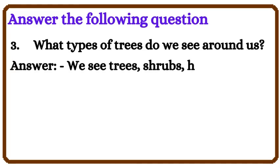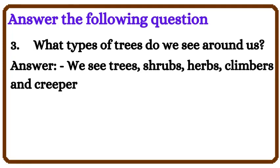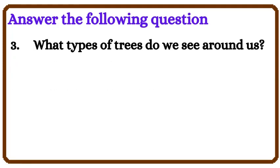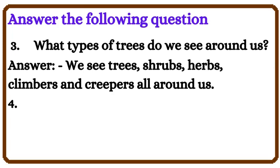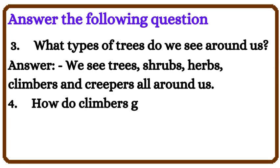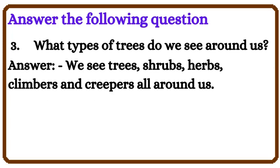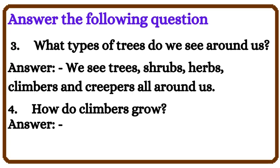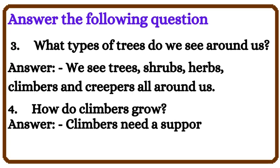Question 3: What types of plants do we see around us? Answer: We see trees, shrubs, herbs, climbers and creepers all around us. Question 4: How do climbers grow? Answer: Climbers need the support of another tree or stick to grow.